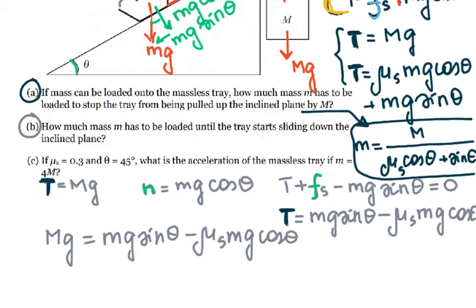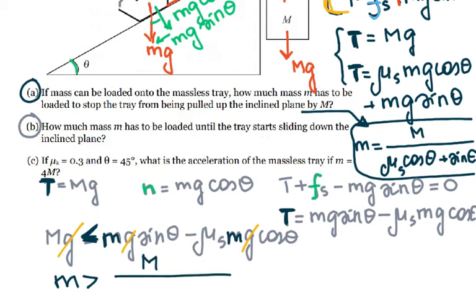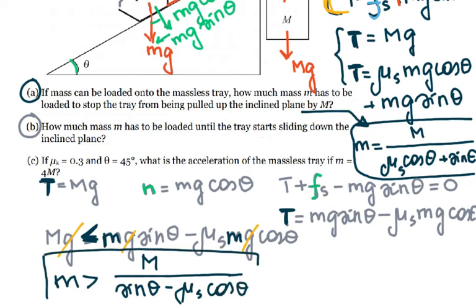Again, I can cancel g from all terms. In this case, the mass m has to be greater — if it equals exactly that value the mass will never start pulling the other mass to the left. So the expression must use a greater-than inequality: m must be greater than M divided by (sine theta minus mu-static cosine theta). That is the answer for part B.